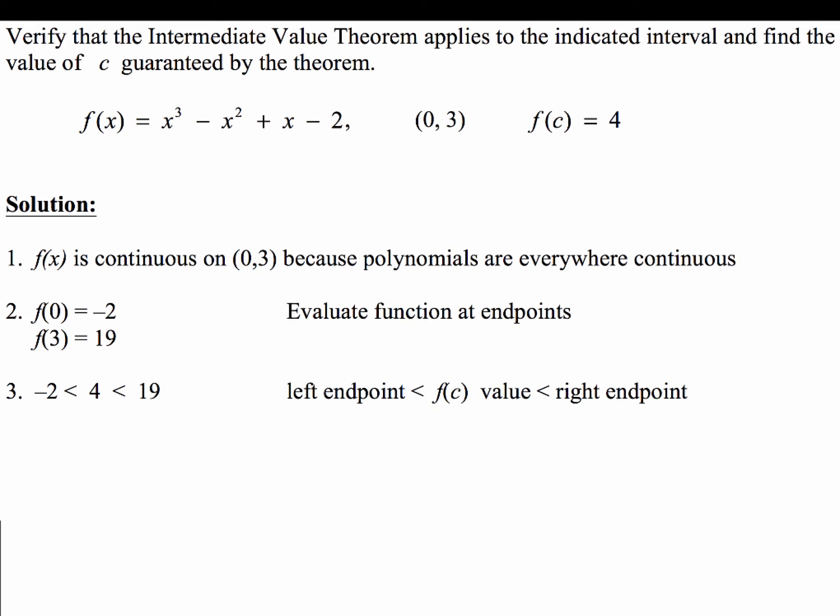Those two endpoints tell us that this y value of 4 has to be between -2 and 19, and that's just common sense. It's our left endpoint less than our right endpoint, and our y value that we're trying to find, this f(c), that's stuck in between -2 and 19. Now, you don't have to write step 3, but some textbooks and some teachers might require that. I know that I don't, but you definitely have to state it this way: f(0) < 4 < f(3).